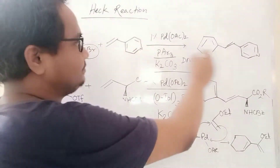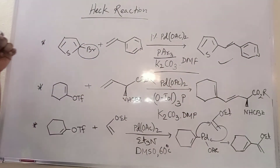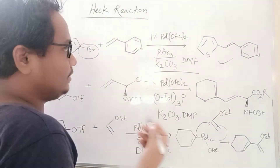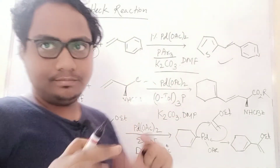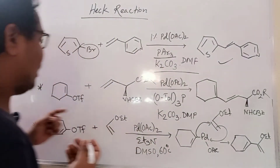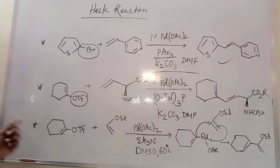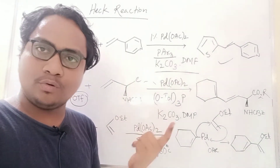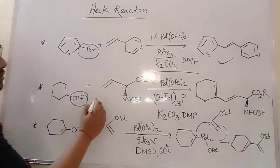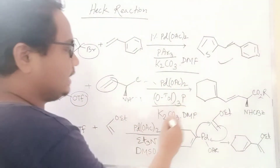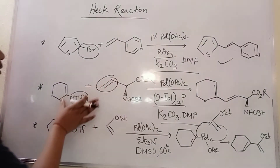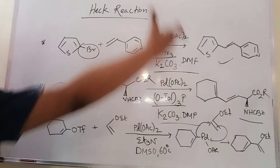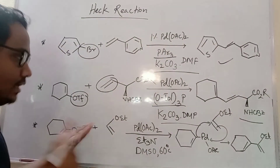The product alkene formed is trans, because of the mechanism — the twisting of the mechanism. Here one kind of alkyl halide — such as a vinyl halide functioning like bromo or chloro — together with a double bond, palladium, ligand, and base participates in the coupling reaction to give the coupled product.